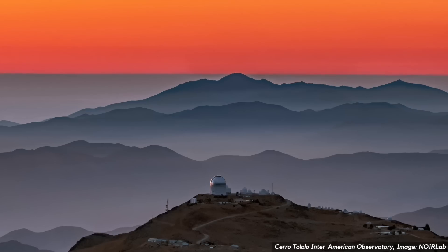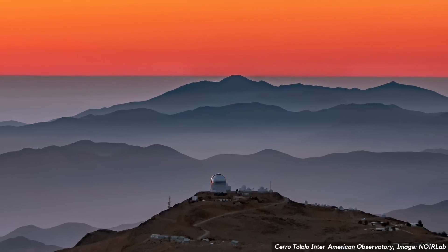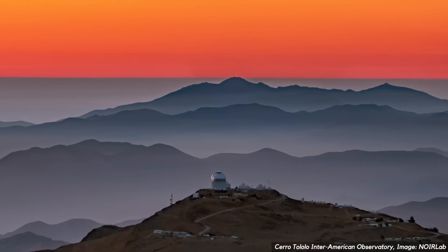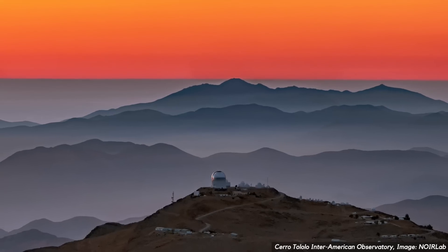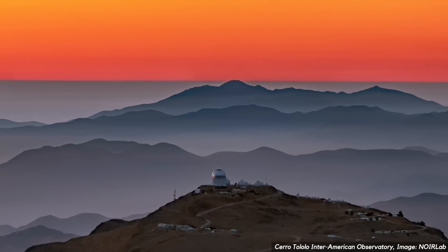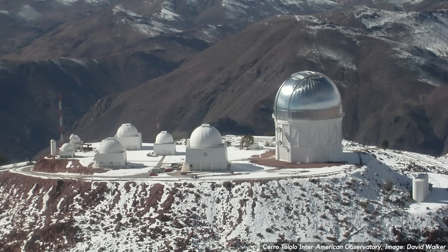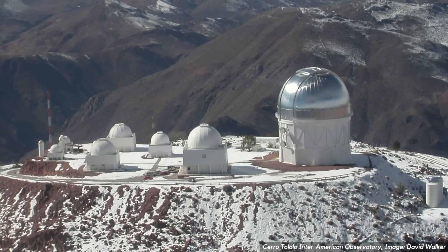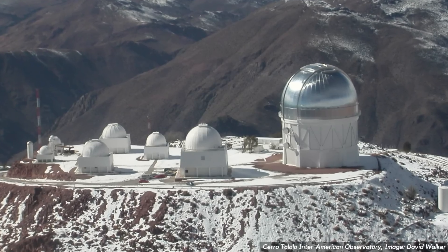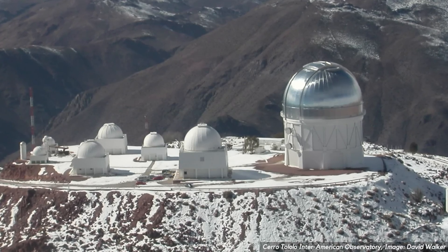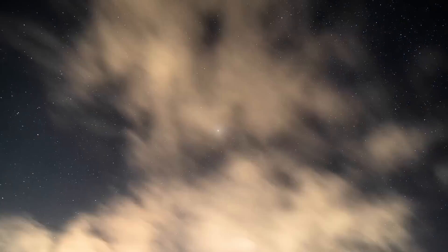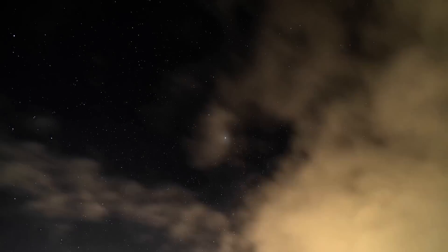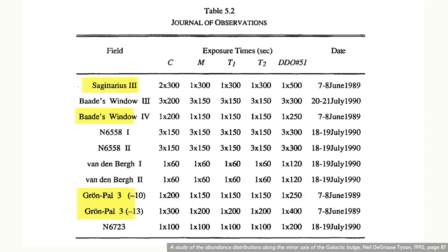Tyson's first observing run was for one night on the 7th of June 1989. To get to the telescopes is a long drive up a bumpy, scary road to an altitude of 2200 meters. Up there the oxygen level is so low that you might be out of breath just walking around. So why would he go all that way for just one night? Perhaps he hoped to observe for longer but got bad weather. All I can tell from his thesis is that he observed four fields of stars that night and returned a year later for two more nights to get the rest.